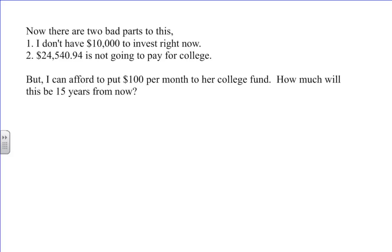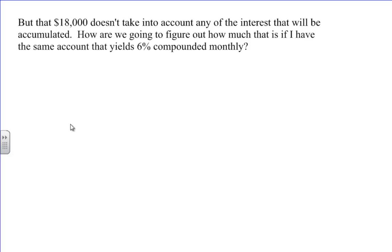Now, there's two bad things. One, I don't have $10,000 to invest right now. And two, $24,000 is not going to pay for college. So I can afford to put $100 per month into a college fund. So what will this be 15 years from now? Well, if I take $100 and multiply that by 12 months in a year, that's $1,200 a year, times 15 years, that's $18,000. But I didn't take into account any interest that would be accumulated.